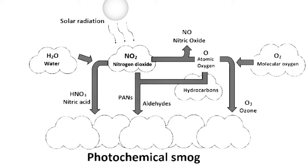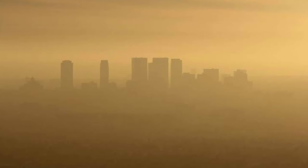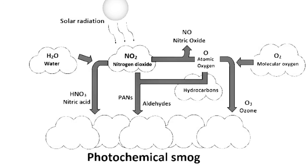Combined with hydrocarbons in the presence of sunlight, nitrogen oxides form photochemical smog. This smog causes many problems like chest pain, shortness of breath, coughing, and eye irritation. The smoke appears to be brownish.